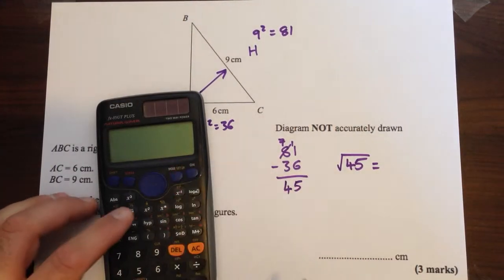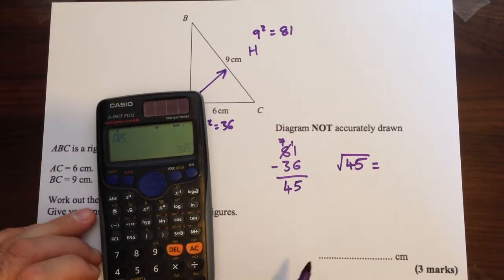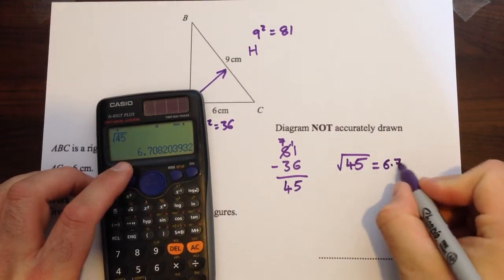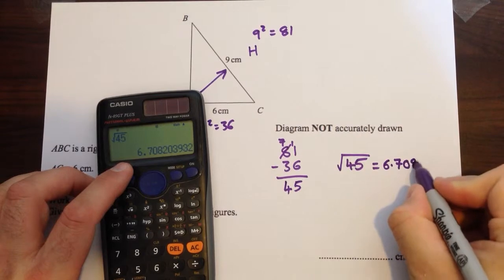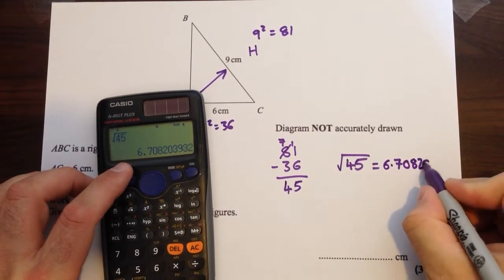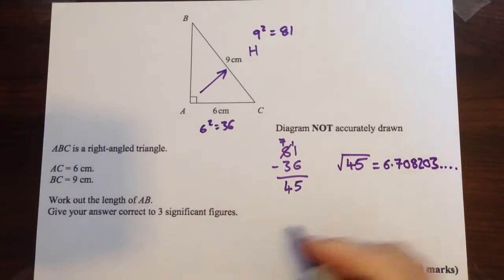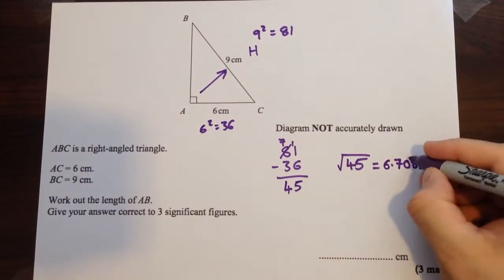So, get your calculator, square root of 45 is 6.708203, and a few more, we only need 3 significant figures, so 1, 2, 3, that's the cutoff point.